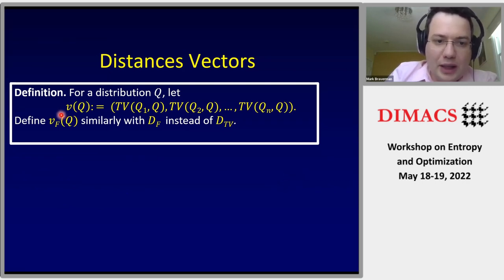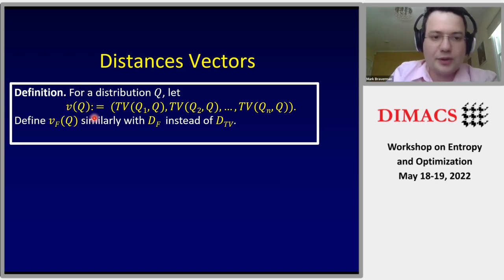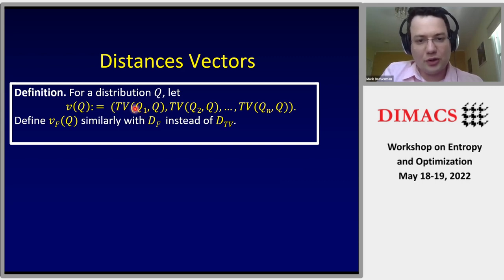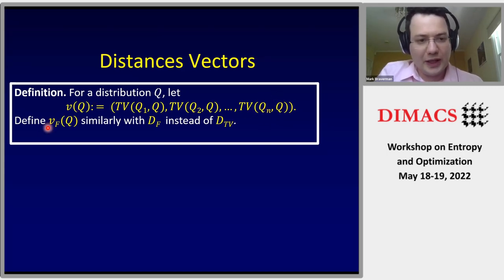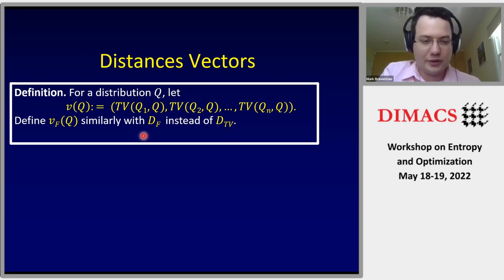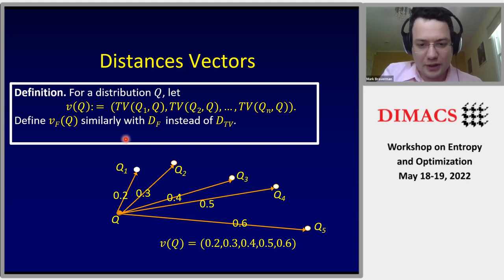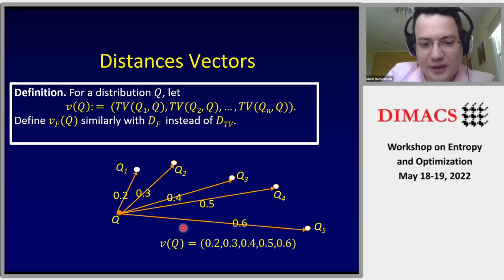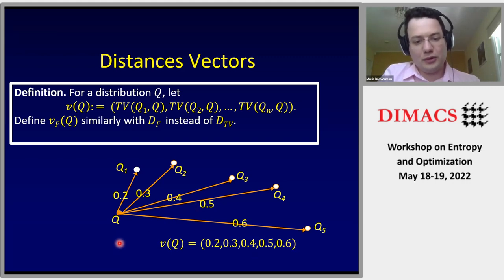The main object we'll be looking at is the distances vector. For a distribution q, we can calculate the n total variation distances between q and each of q_1, q_2, ..., q_n, and define this as the vector v(q). Similarly, we define v_f(q) using the surrogate distance with f instead of total variation. In a picture with, say, five candidates, v(q) might be the vector (0.2, 0.3, 0.4, 0.5, 0.6) — one distance per candidate.